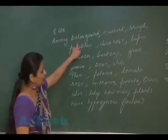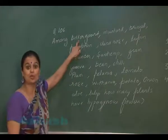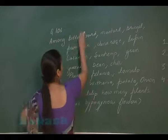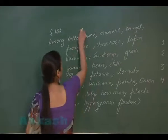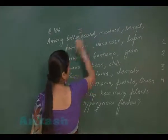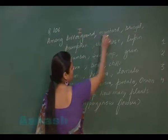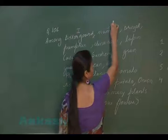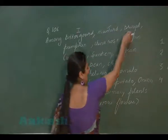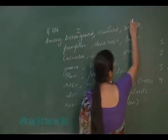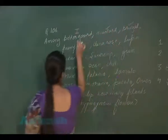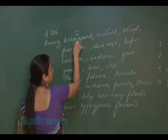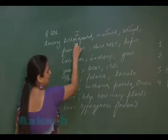Bitter gourd belongs to the Cucurbitaceae family, so it has inferior gynoecium. Mustard — Brassicaceae — superior. Brinjal — Solanaceae — superior. Pumpkin — Cucurbitaceae — inferior.